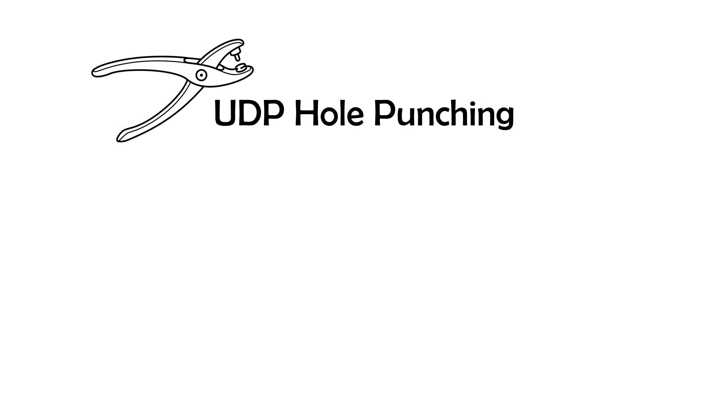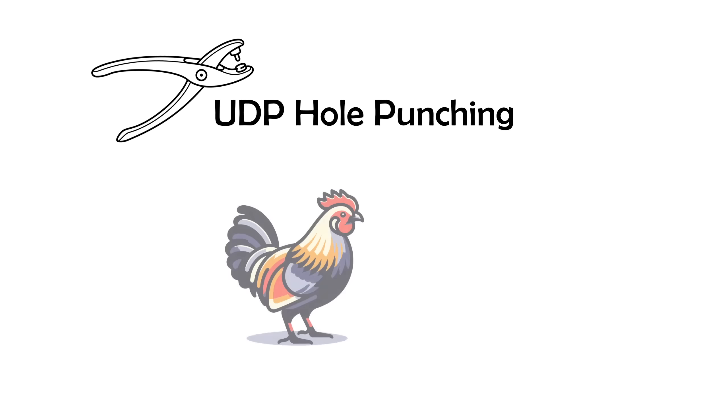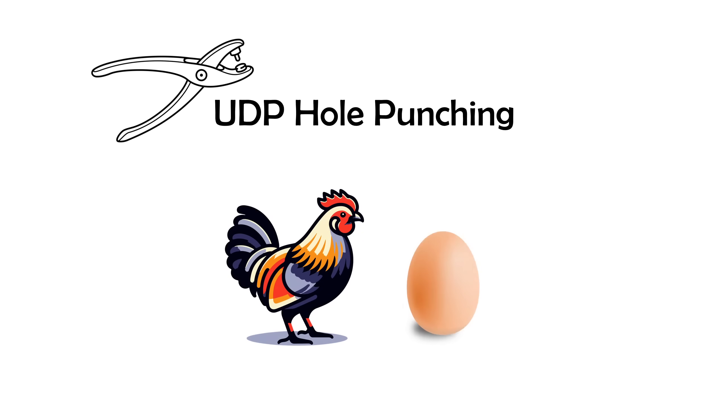This video is going to cover UDP hole punching, one of the most genius workarounds to a chicken and egg problem that arises during peer-to-peer communication.